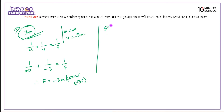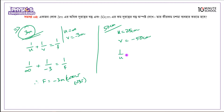For the near vision correction: an object at 25 centimeters should have its image at minus 50 centimeters. So using 1 over u plus 1 over v equals 1 over f: 1 over 25 plus 1 over v equals 1 over f, and with v equals minus 50, we get 1 over f.